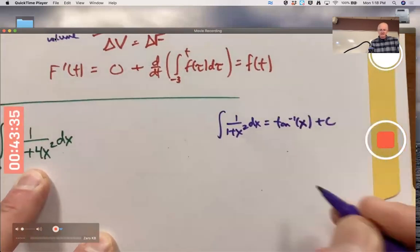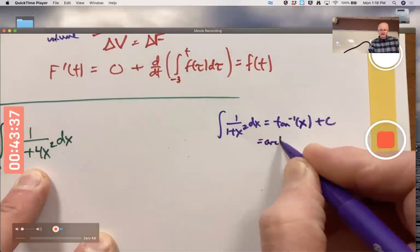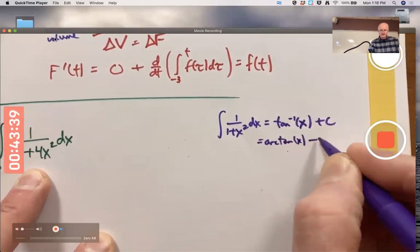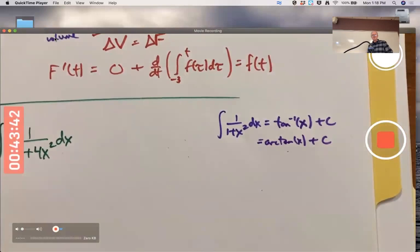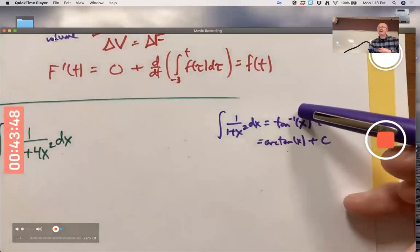You could write inverse tangent of x plus C, or arctangent of x plus C. This is not the same as the cotangent function. It's not tangent to the negative one power - this means inverse function, not negative one power.